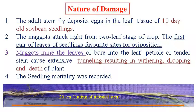Nature of damage: The adult stem fly deposits eggs in the leaf tissue of 10-day-old seedlings at the early stage. During the dry spell of rainfall, the infestation may be increased. The maggots attack right from the two-leaf stage of the crop. The first pair of leaves of the seedling is the favourite site of oviposition. Maggots mine the leaves and bore into the leaf petiole or tender stem, making tunnels that result in withering, drooping, and death of the plant. Initially, plant count may be affected due to attack of stem fly.